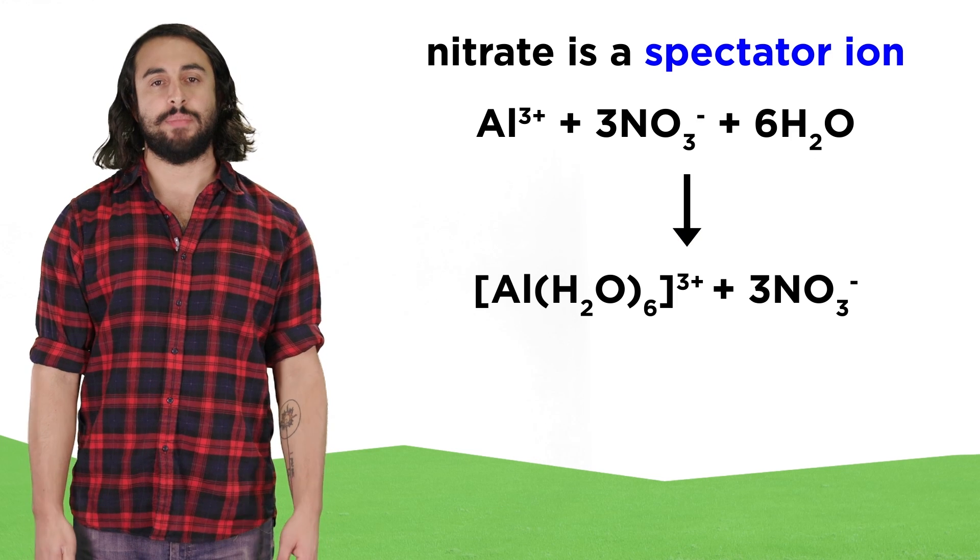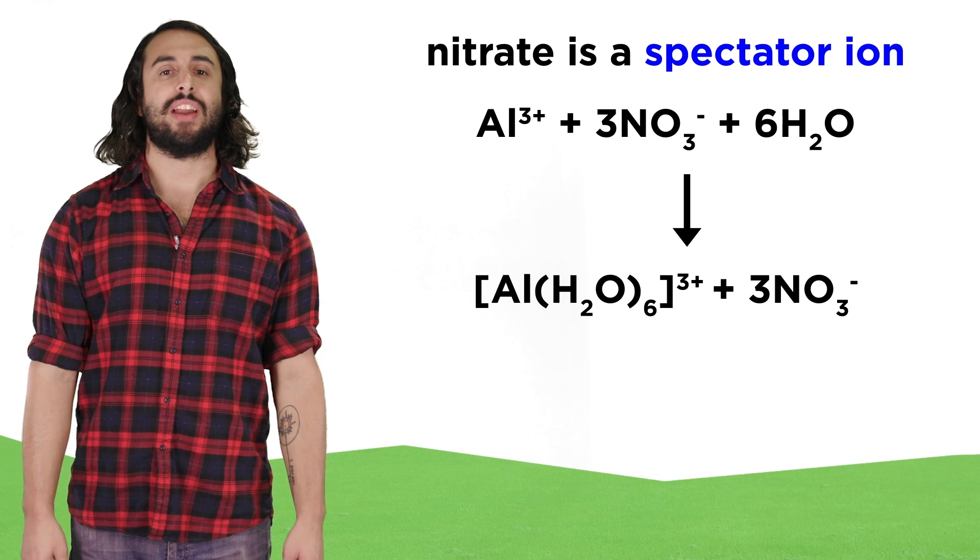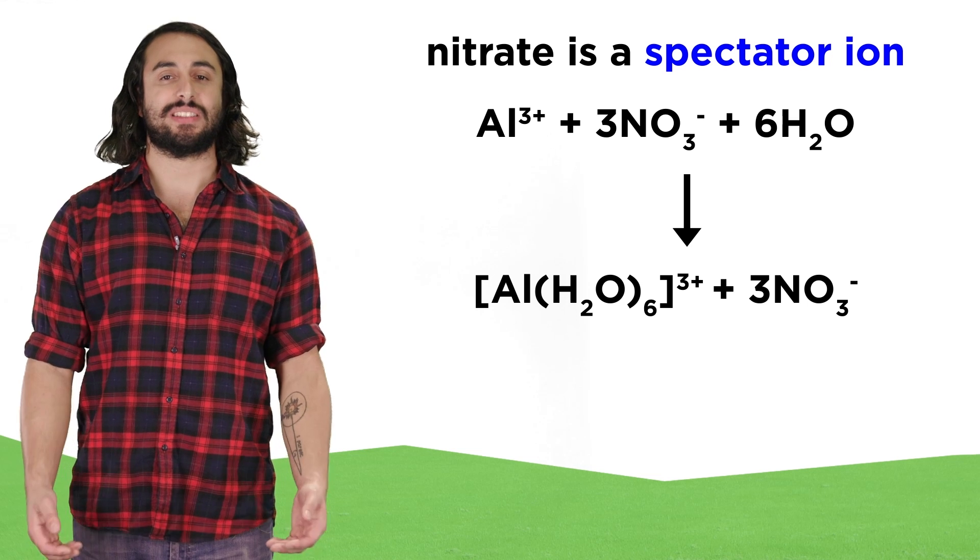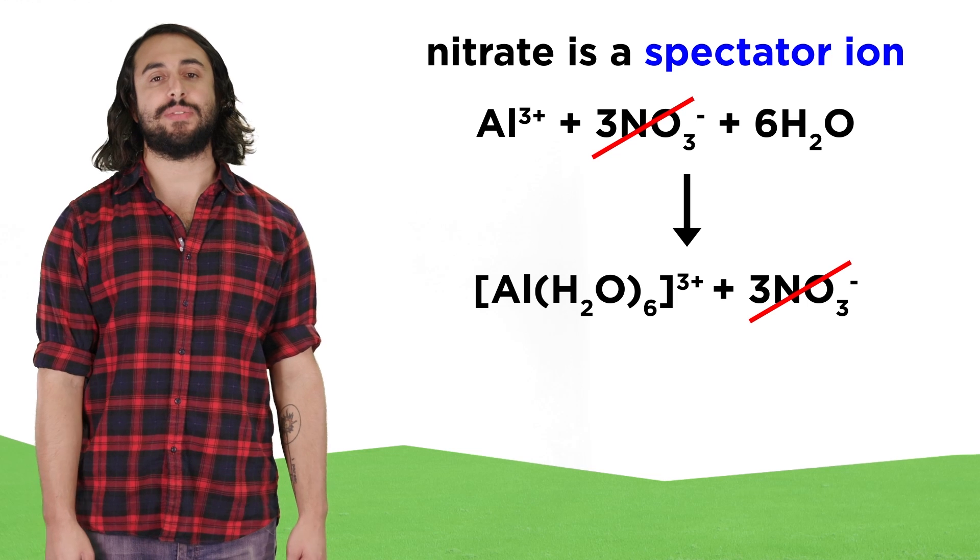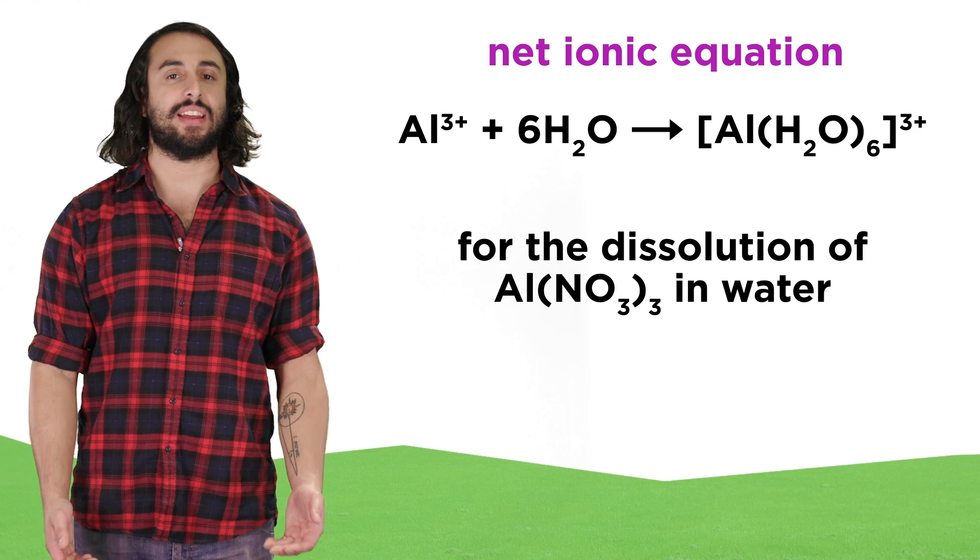For this reason, we can highlight this chemistry in the following equation, and notice that nitrate is a spectator ion this time. We can cancel that out, which leaves us with the following net ionic equation.